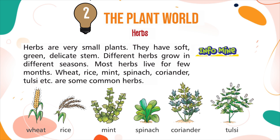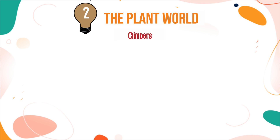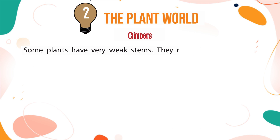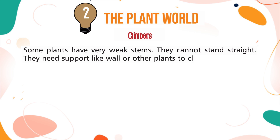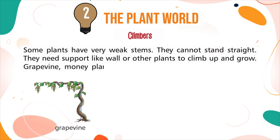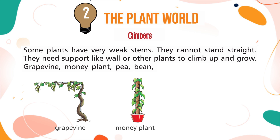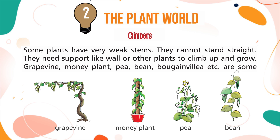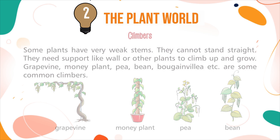Inform mind: Herbs are also called seasonal plants. Climbers are plants that have very weak stems. They cannot stand straight and need support like a wand or other plants to climb up and grow. Grapevine, money plant, pea, bean, bougainvillea, etc. are some common climbers.